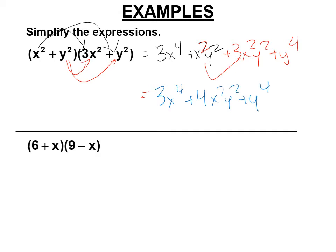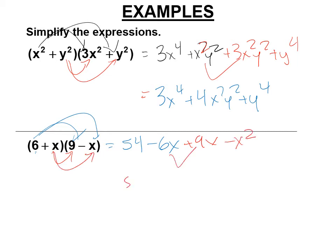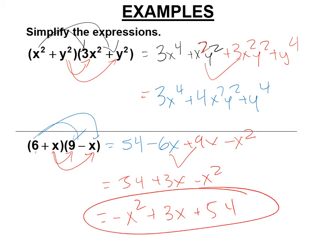Normally x is first and the number is second, but we want to show you just the opposite order. So 6 times 9 is 54, 6 times negative x is negative 6x. Then x times 9 is 9x, and x times negative x is negative x squared. We combine like terms and get 54 plus 3x minus x squared. If you're looking for a textbook answer, put this in descending order of the exponent of x: negative x squared plus 3x plus 54.